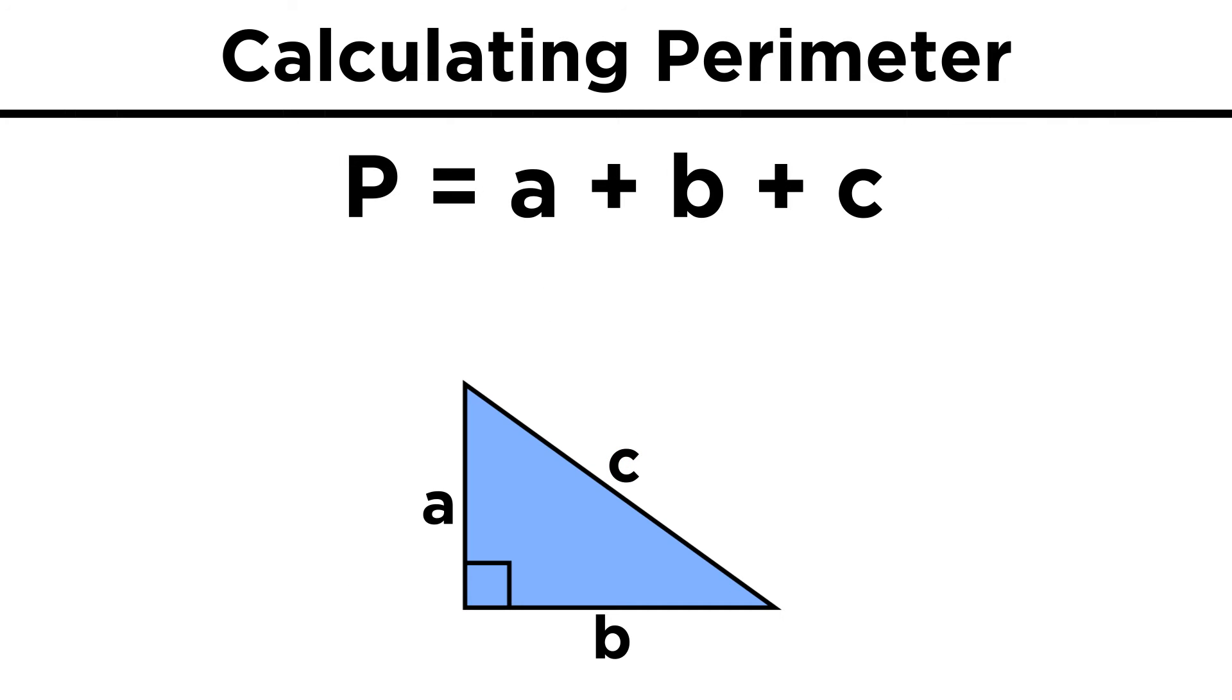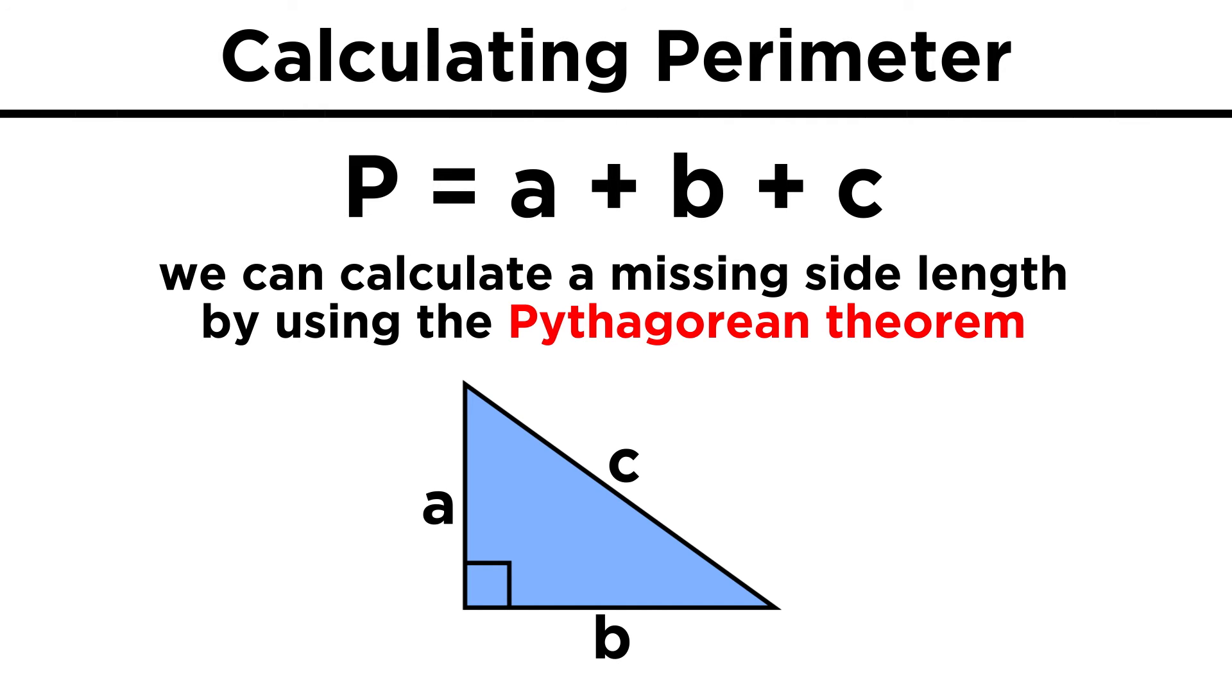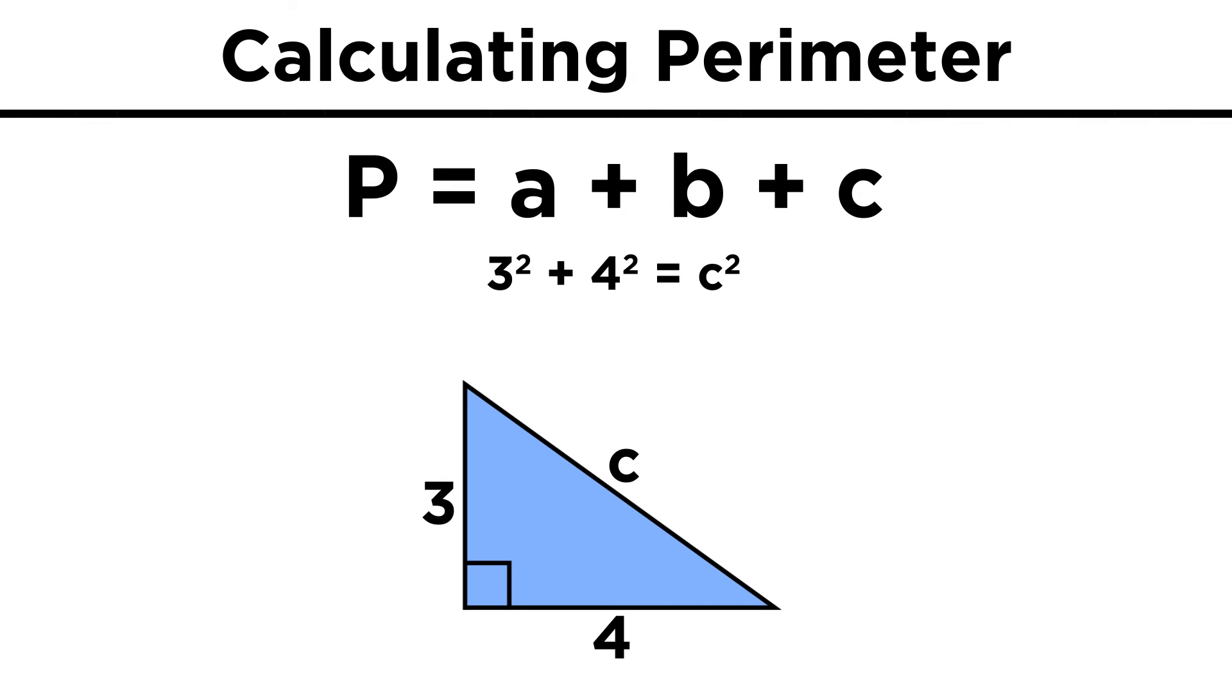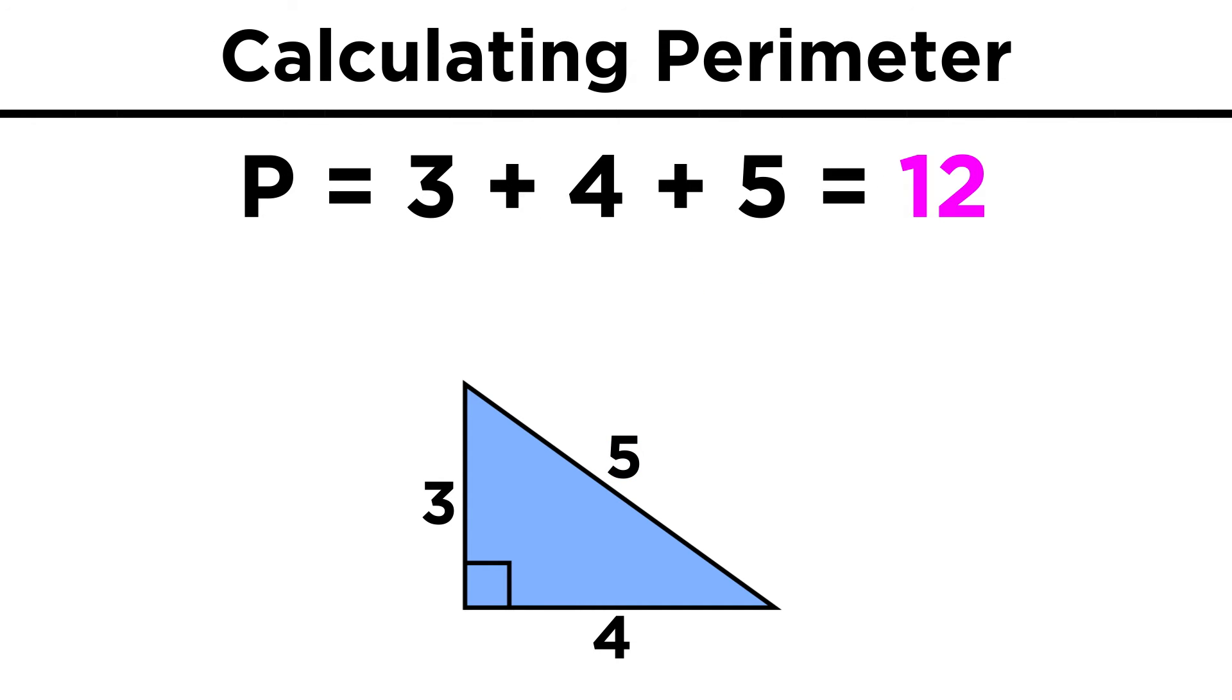If we have a triangle, again we add up the sides, and if we have a right triangle with an unknown length, we know that we can use the Pythagorean theorem to find the missing side. Like this one, if the legs are three and four, we know the hypotenuse must be five, and the perimeter is therefore twelve.